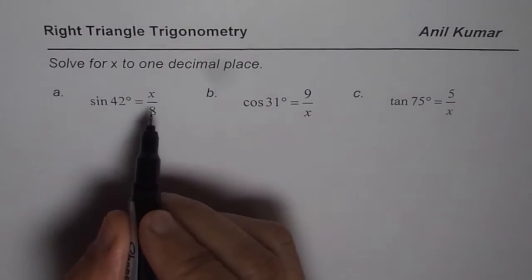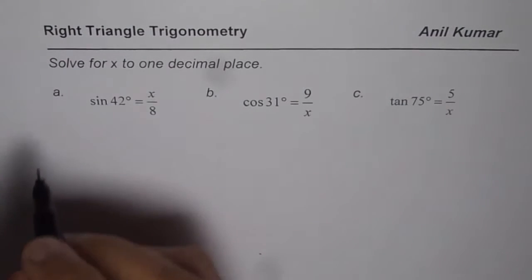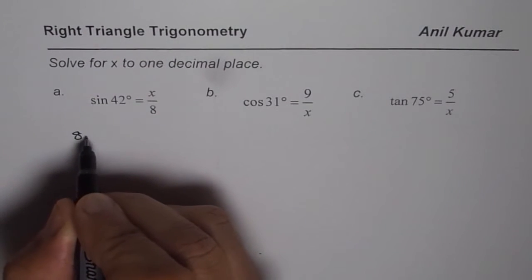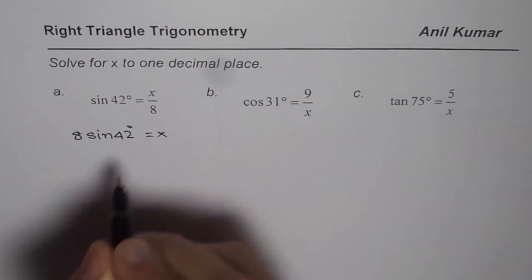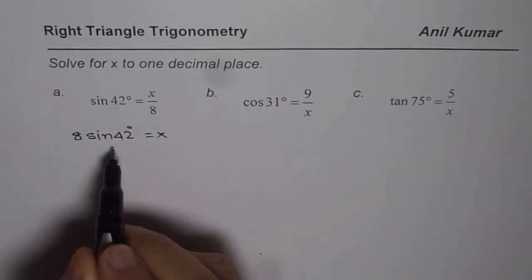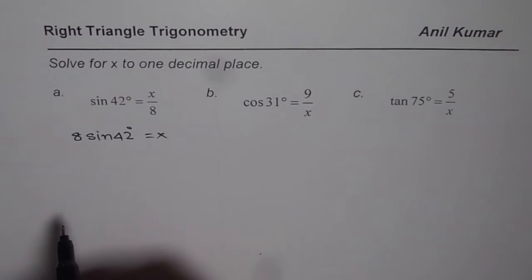Let us solve them one by one. So, x over 8 is sin of 42. When you cross multiply, you get 8 sin 42 degrees equals to x. Now you can use the calculator. Multiply 8 with sin 42 degrees and then find x.